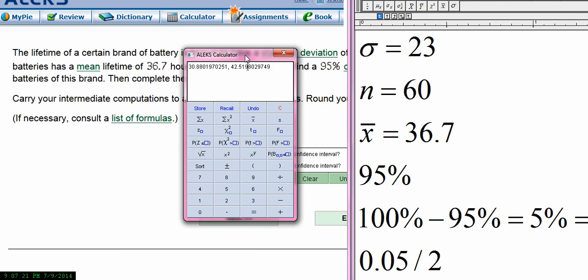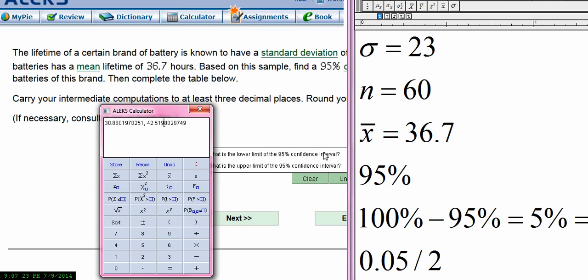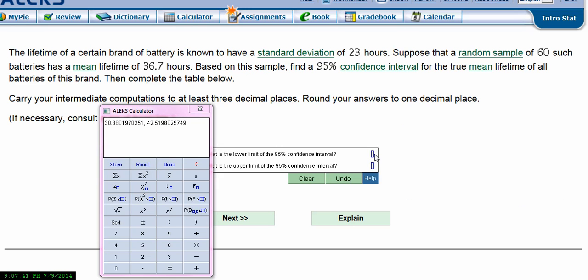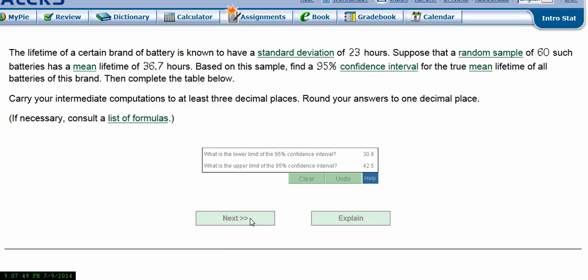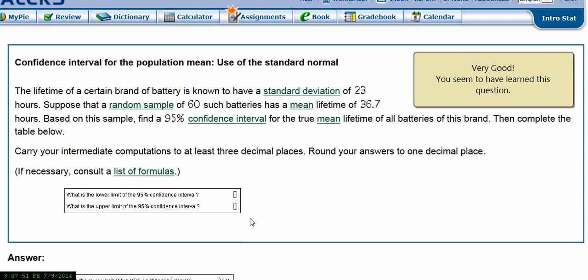And so we get 30.88, which rounds to 30.9, and then 42.5. And so we have it.